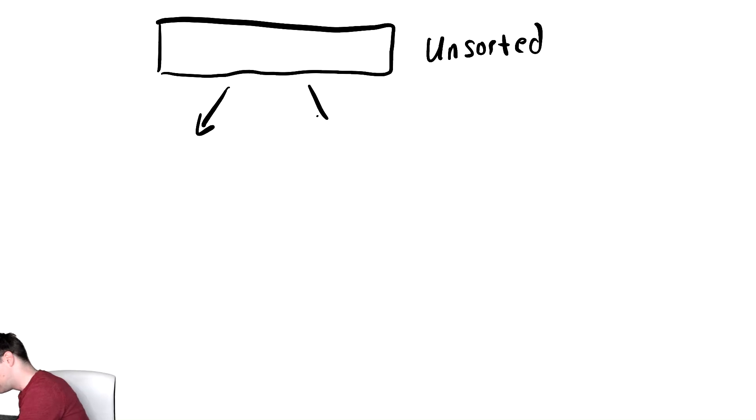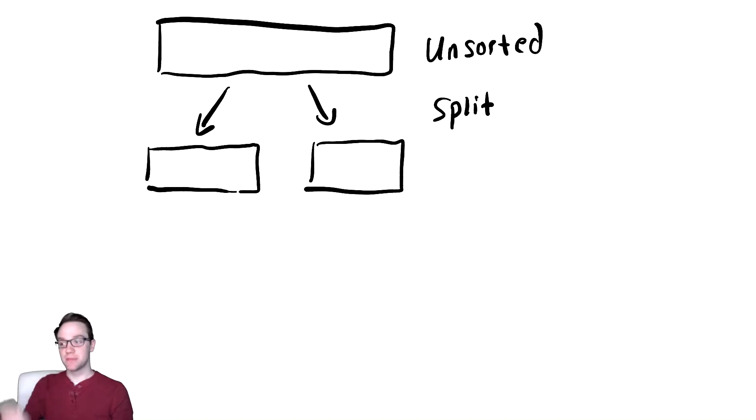If you have an unsorted array, one way to sort it is to split it into two separate arrays. You could say in the middle, but we'll see whether that matters eventually. Once we split the array, we then sort the two halves.